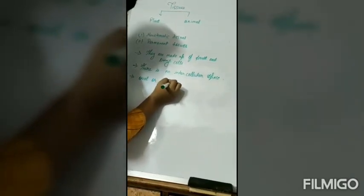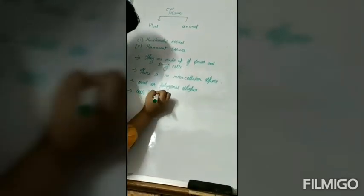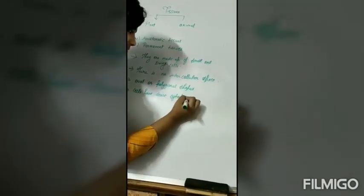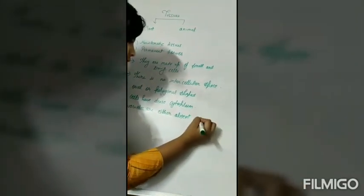The shape of the cells is oval or polygonal. Cells have dense cytoplasm. Vacuoles are either absent or very less.